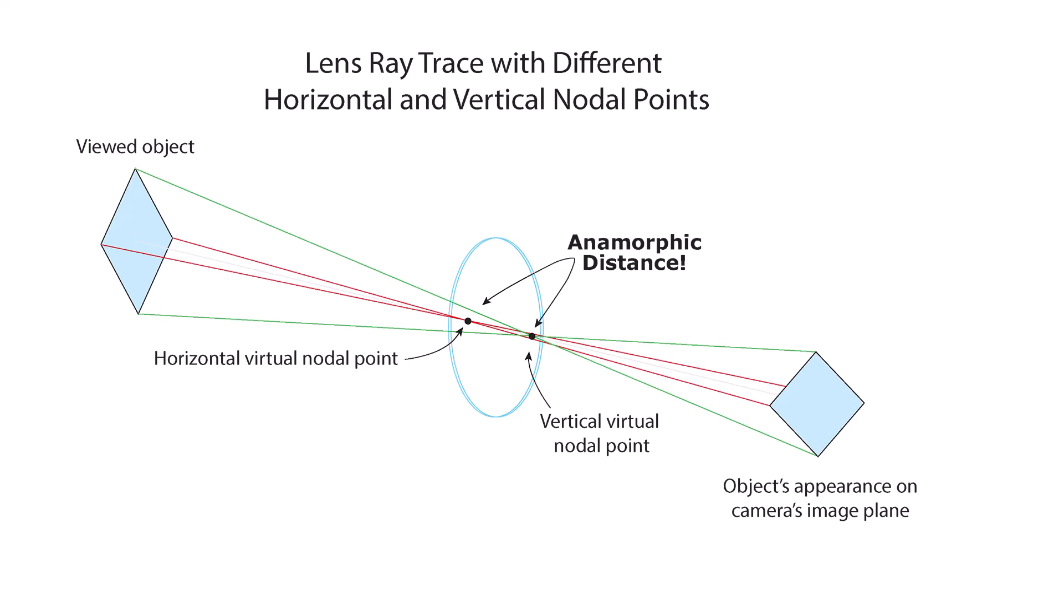Some of the lenses have different curvatures in the vertical and horizontal direction, and those can combine to create the two different nodal points you see here. The details aren't important, just the fact we have two different nodal points.